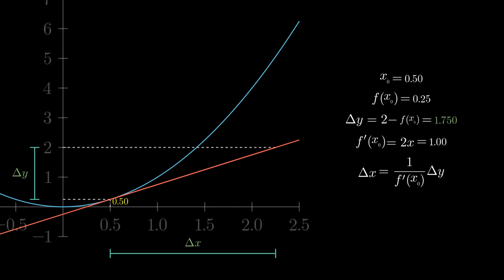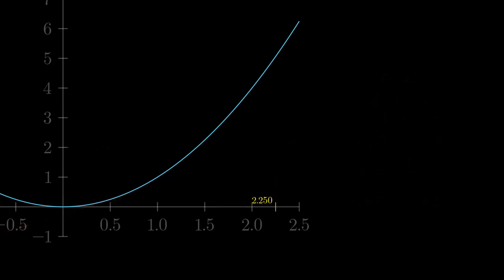Now, the next corrected or improved approximation is obtained by adding this correction factor delta x to our previous assumption. This is 0.5. So, this number becomes our new assumption. And we repeat the same process again.